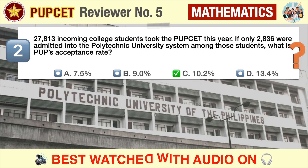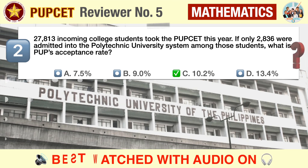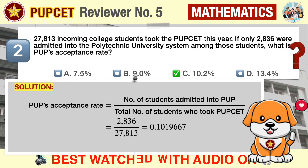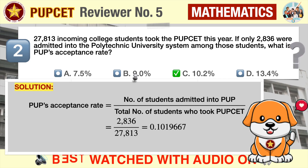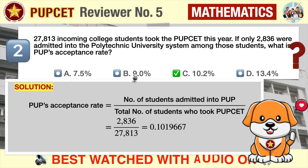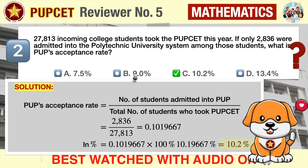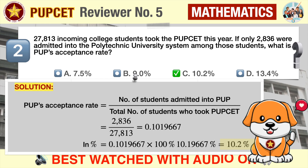The correct answer is C: PUP's acceptance rate is 10.2%. This is a simple percentage problem. To get PUP's acceptance rate, we divide the number of admitted students by the total number of students who took the PUPCET. We arrive at 0.1019667. Since the answer choices are expressed in percent, we multiply by 100 to get 10.19667, which we round off to 10.2.